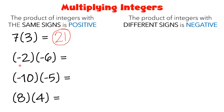Second one: negative 2 times negative 6. Both are negative. They have the same sign. It means your answer is also positive. So 2 times 6 is equal to 12, and your answer is positive 12.